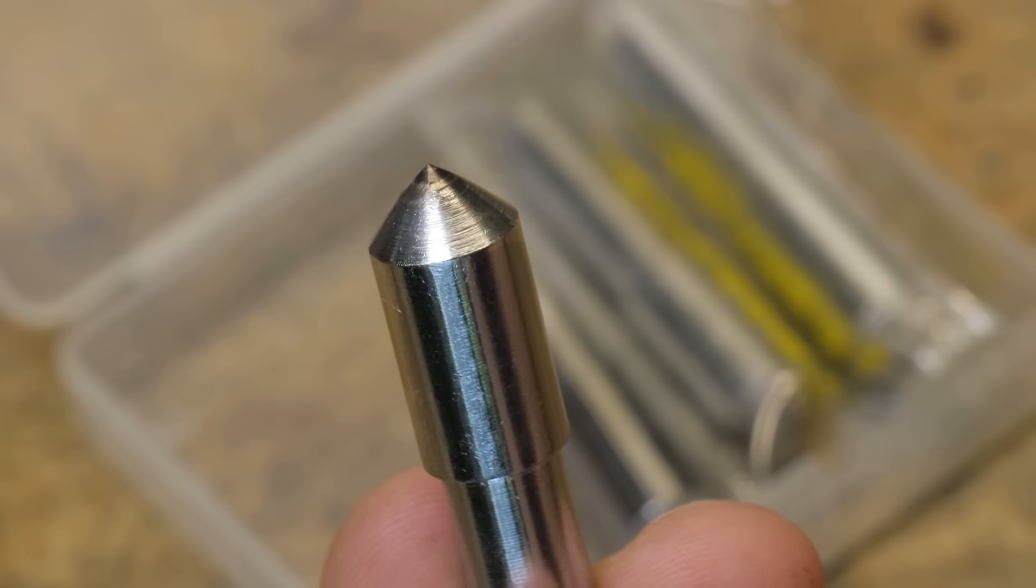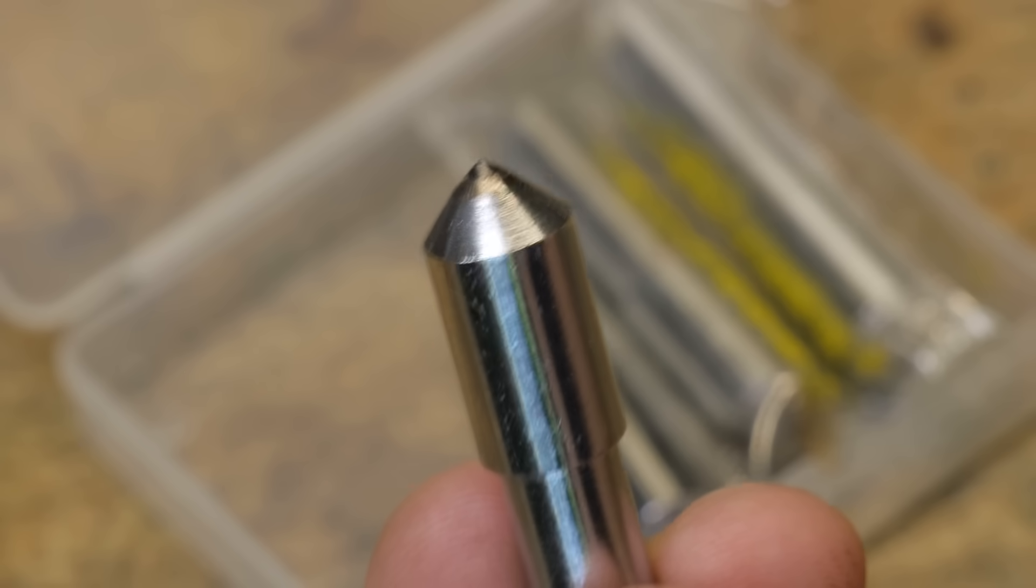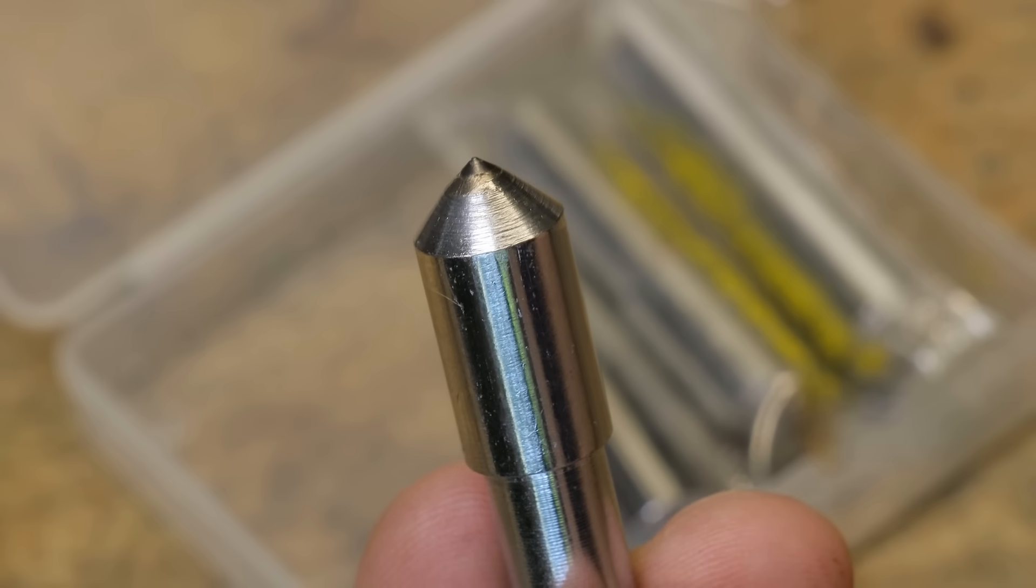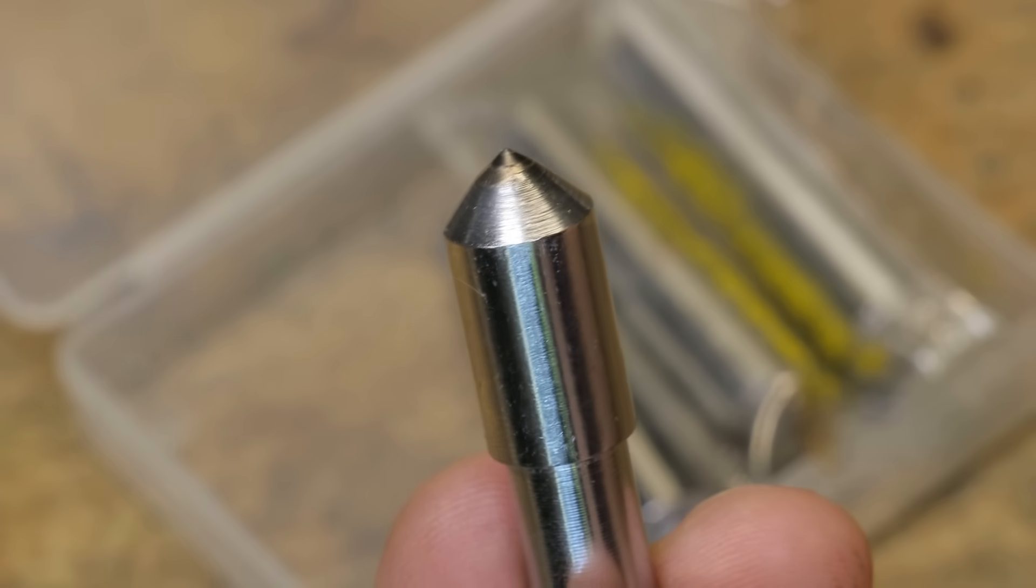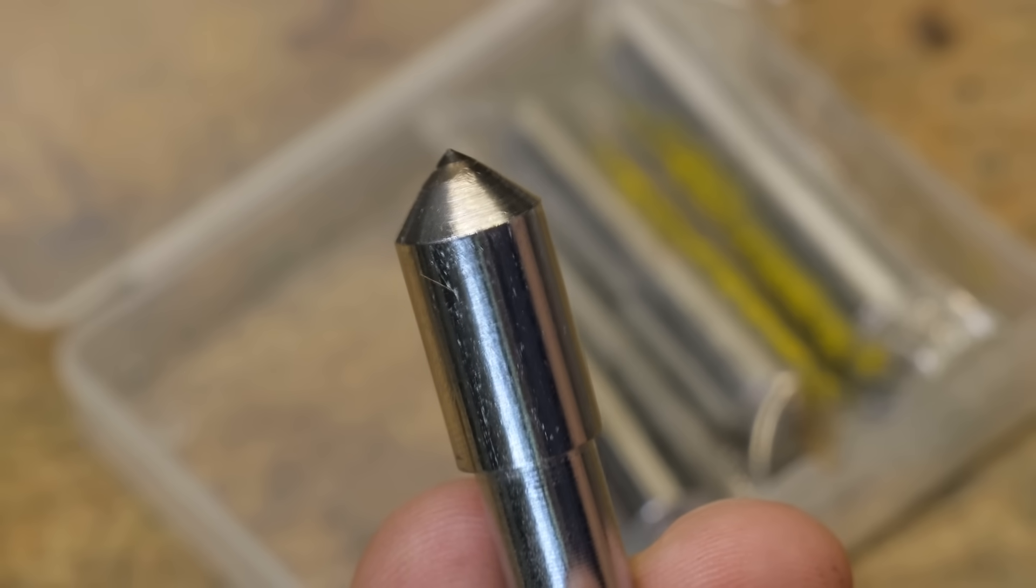Technically, they're made for dressing grinding wheels, which is the reason I bought them last year, but I see no reason why I can't reuse them as engraving bits. They look almost identical, and the tip is made of diamond. It will need a bit of modification, but for 10 bucks, let's see if it works.